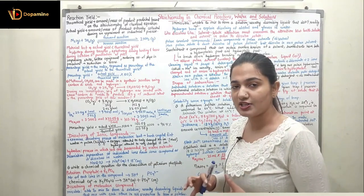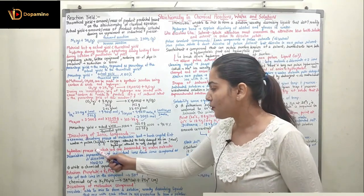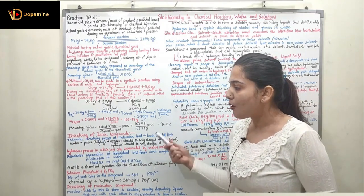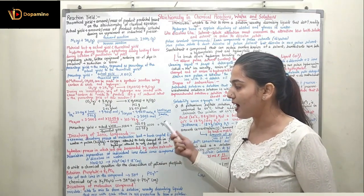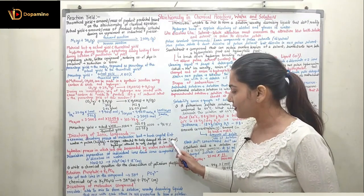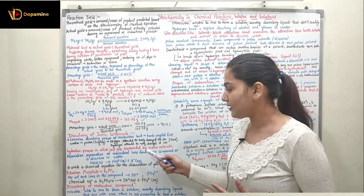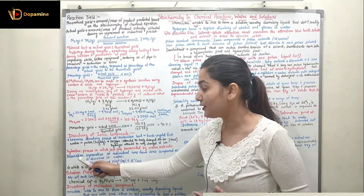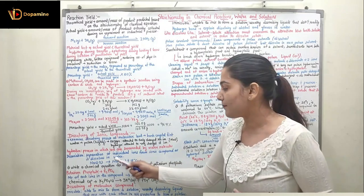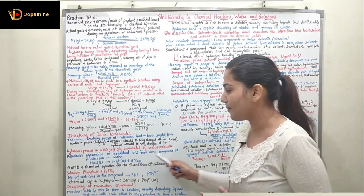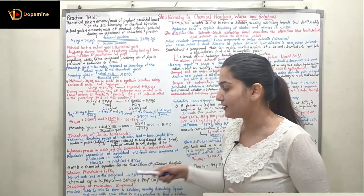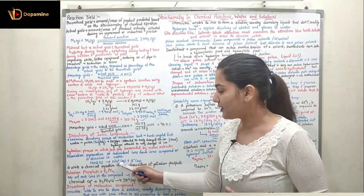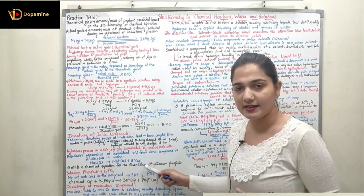Hydration is the process in which ions are surrounded by water molecules. We see how the ionic compound dissolves — when water surrounds the given ions, it is called hydration. Coming to dissociation: the separation of individual ions from the ionic compound as it dissolves in water takes place.